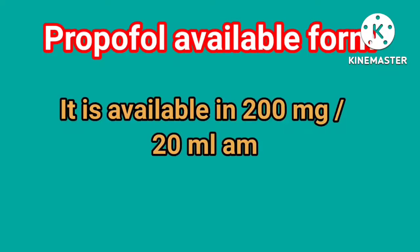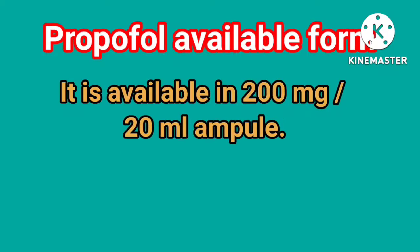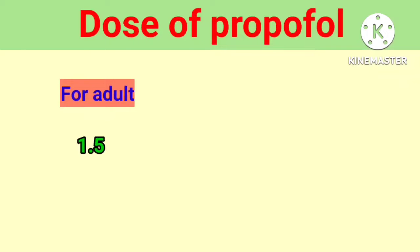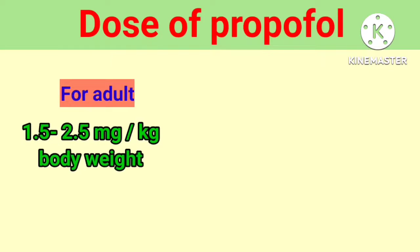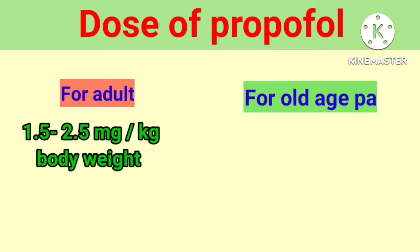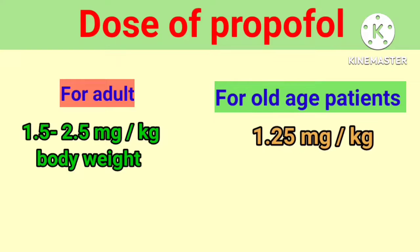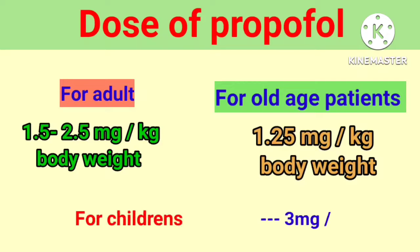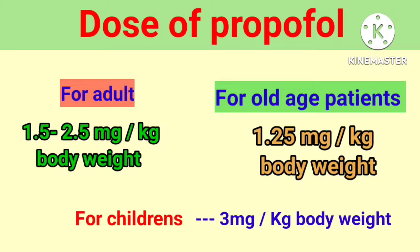Propofol available form: it is available in a 200 mg per 20 ml ampoule. Dose of Propofol — for adults: 1.5 to 2.5 mg per kg body weight. For old age patients: 1.25 mg per kg body weight. For children: 3 mg per kg body weight.